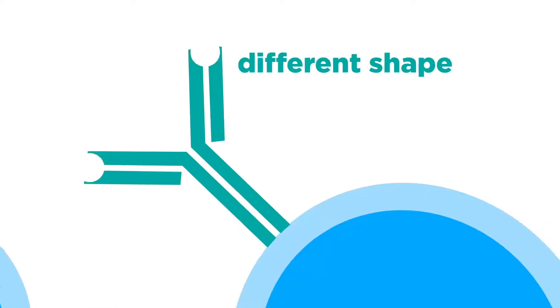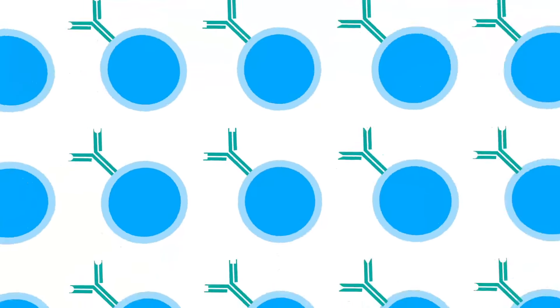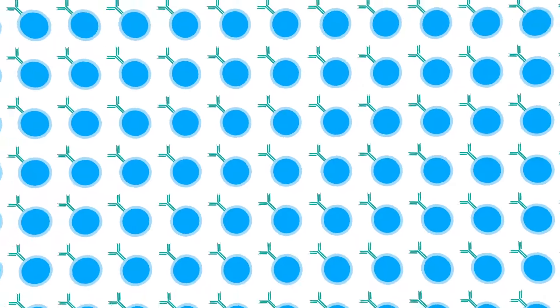However, not all antibodies will work against these bacteria. They have to be exactly the right shape, a bit like a key fitting a lock. Our bodies have a library of billions of white blood cells, each of which can make just one shape of antibody. Only a few of these antibodies will match the invading bacteria.